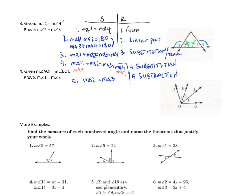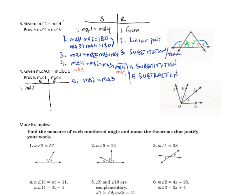On this next proof, we are told that angle AOI equals angle EOU, and we need to prove that angle 1 and angle 3 are congruent. Let's start with the given. Statement 1: the measure of angle AOI equals the measure of angle EOU — and this was given.